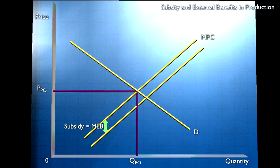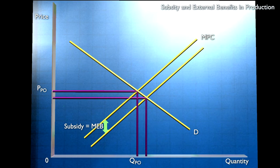The principle is the same as with taxes. We restore the identity between private and social cost. And now the level of output and the price which is optimal for the firm is the level of output and price which maximises social welfare.